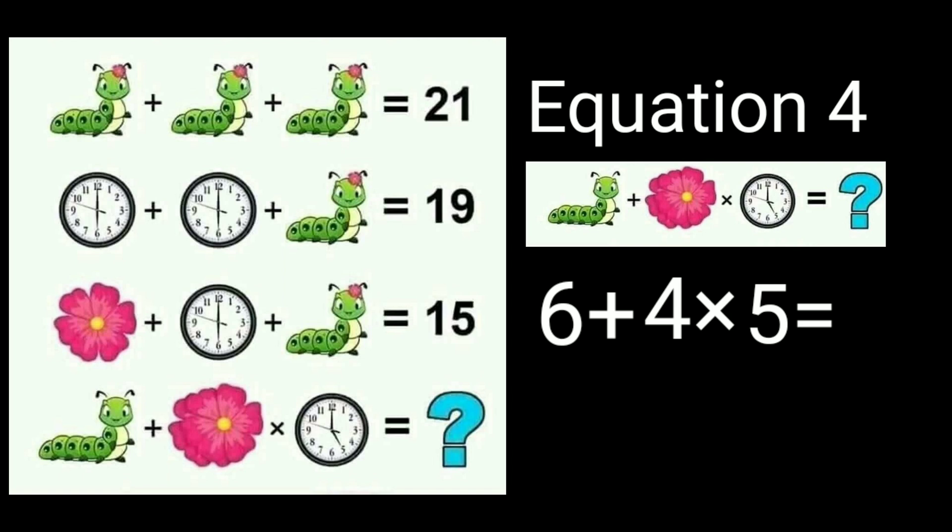Now, by using BODMAS, we will get the answer. 5 into 4 is 20, 20 plus 6 is 26. So the answer of this puzzle is equal to 26.